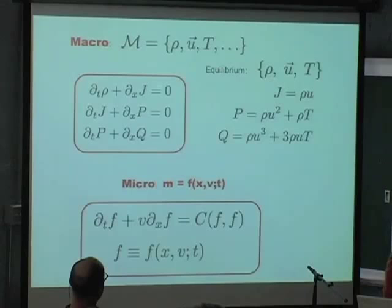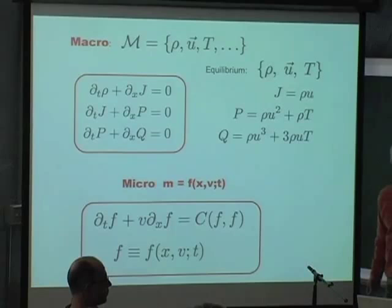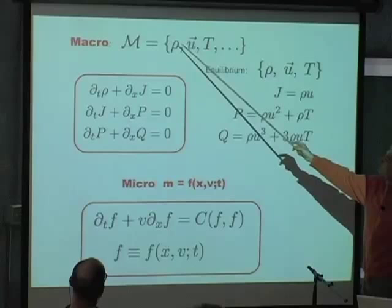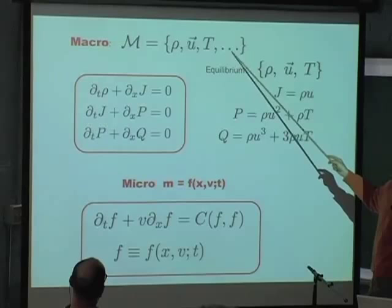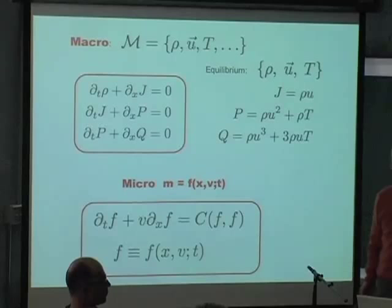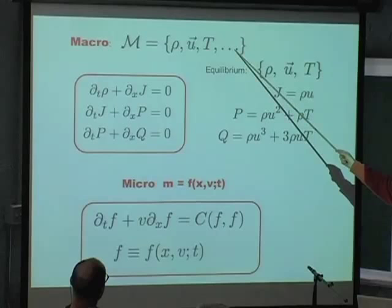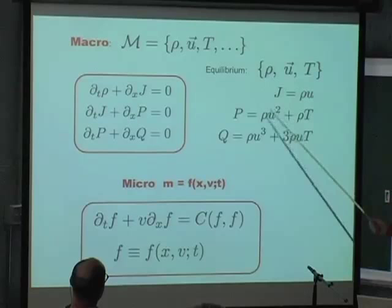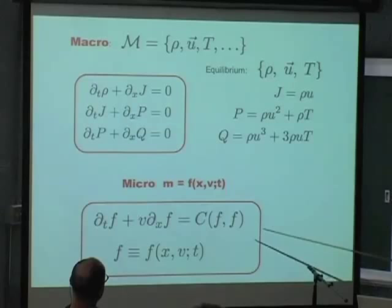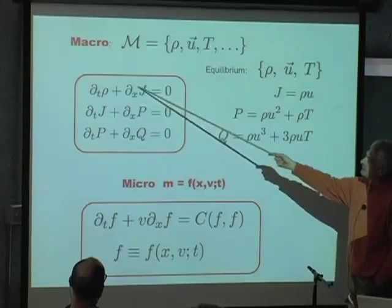The macroscopic description is based on a mathematical model including the density of the fluid, the velocity, and temperature — plus fields which describe the departure from local equilibrium. For now, accept that the equilibrium state of the fluid will be described by these three variables only, which means that the equations of ideal hydrodynamics will essentially be conservation equations.